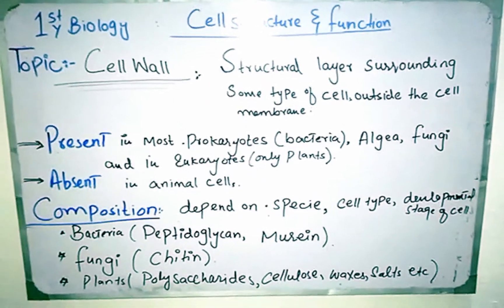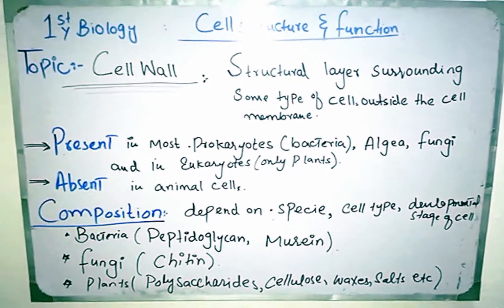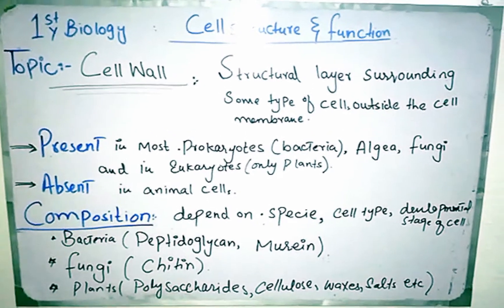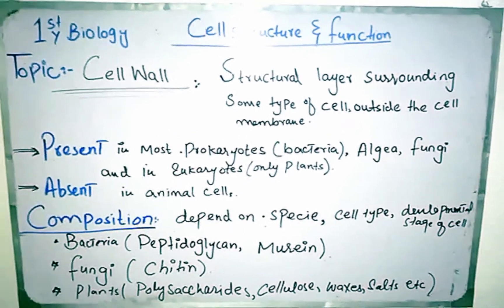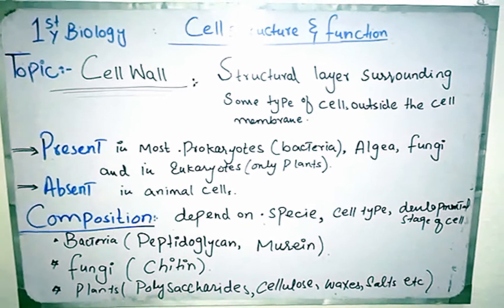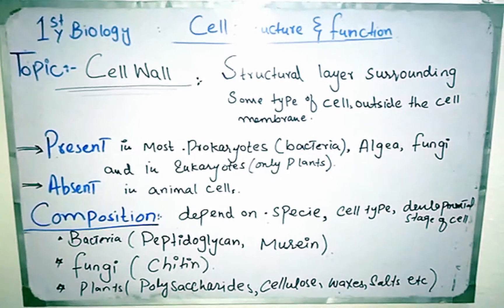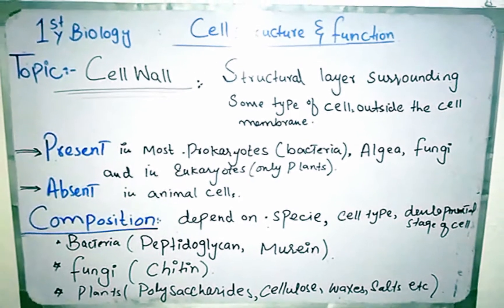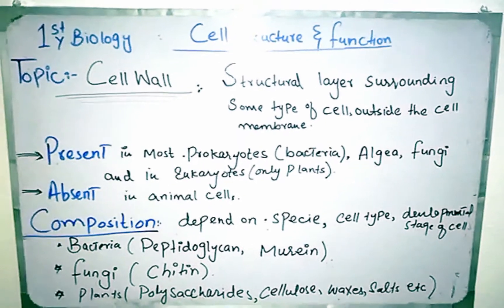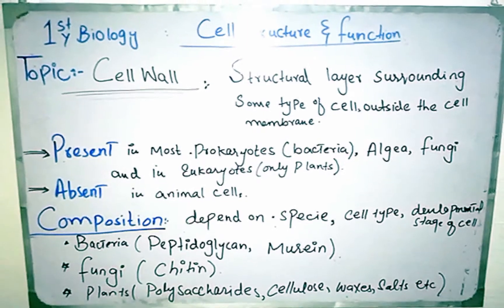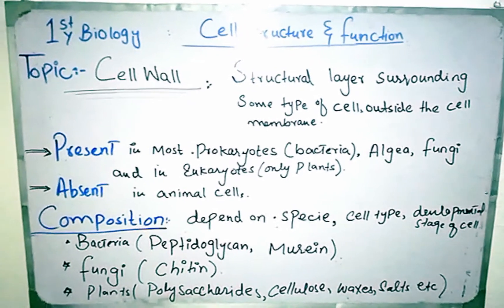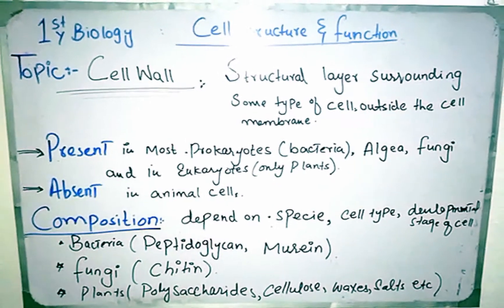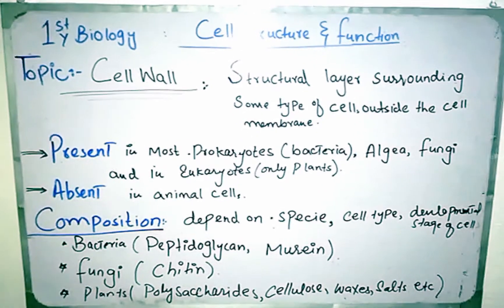Today the next topic is cell wall. Cell wall was discovered by Robert Hooke in 1665 when he examined cork under his self-made microscope. He observed that the cork consists of many small honeycomb-like chambers surrounded by thick walls. So basically, cell wall was discovered by Robert Hooke in 1665.